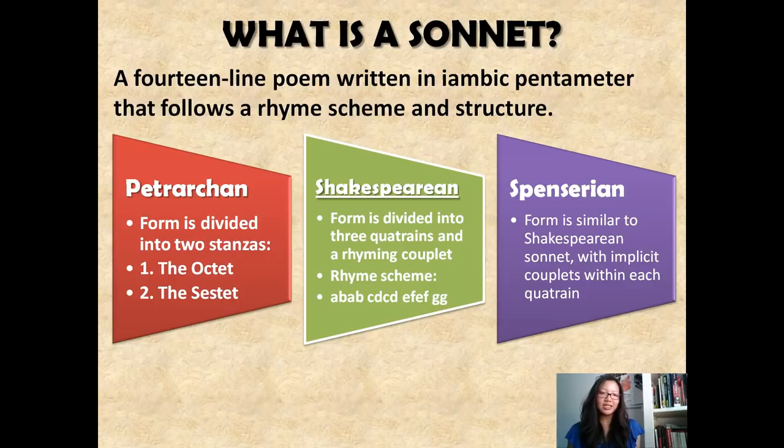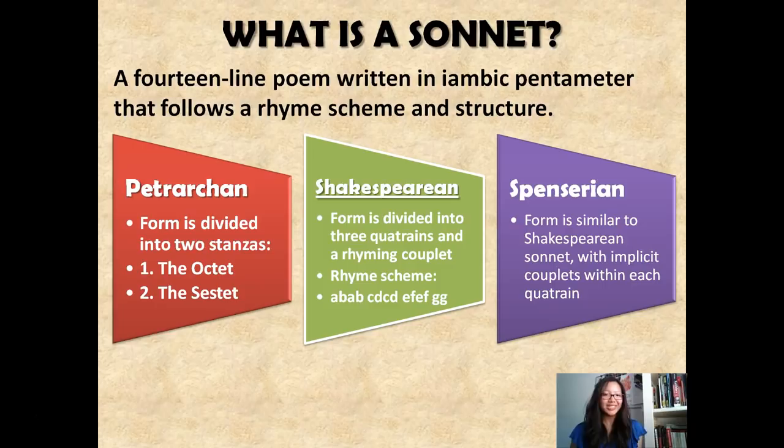The Spencerian sonnet, on the other hand, is not as popular but is somewhat known. It is similar to the Shakespearean form, except that there are implicit rhyming couplets embedded between each stanza. That is some background information comparing the three different types of sonnet — the Petrarchan, Shakespearean, and Spencerian. Today we will be focusing on the Shakespearean sonnet.